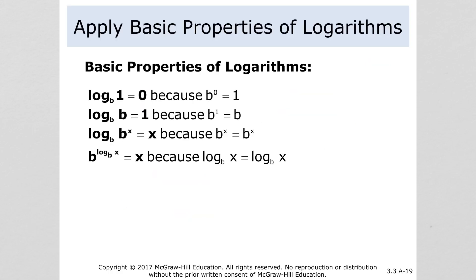On to our shortcuts. Log base b of 1 is 0 — why? Because if we rewrite it, b to the 0, we know that b to the 0 is 1. So this tells us log of 1 is always 0 no matter what the base is — whether it's log base 3, just log which is log base 10, or natural log of 1. It's always 0.